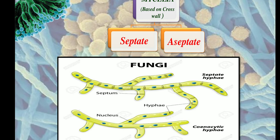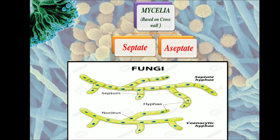A fungus which has this cross wall is called septate hyphae or septate mycelium. Fungi which lacks this cross wall is called aseptate mycelium or aseptate hyphae. In an aseptate mycelium, septa is absent and the hyphae are multinucleated.